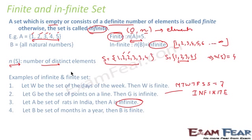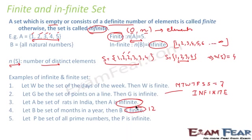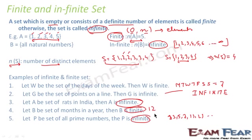Set B is the set of months in a year — there are 12 months, so B is a finite set. Set T is the set of all prime numbers: 2, 3, 5, 7, 11, 13, and the list goes on infinitely — so T is an infinite set.